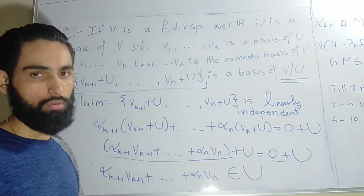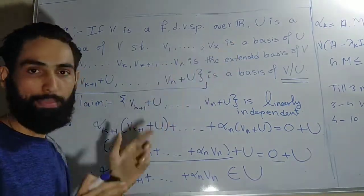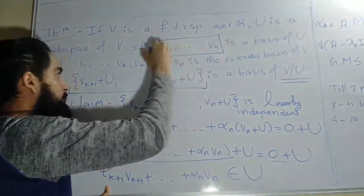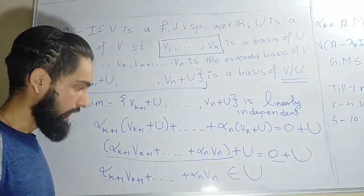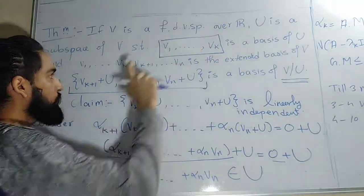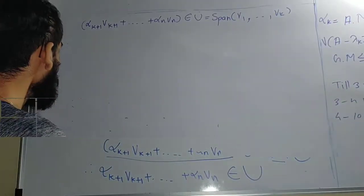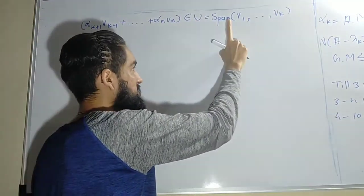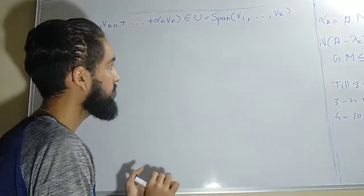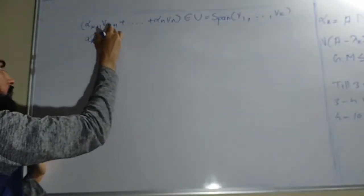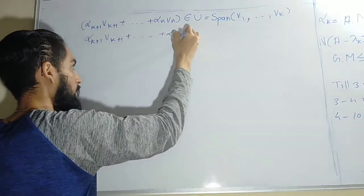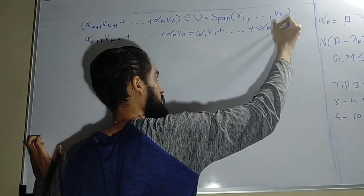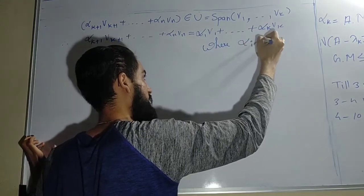What do we know about U? U is a subspace spanned by v1, ..., vk. Since that element belongs to U, it must be a linear combination of those basis elements. So we can write: αk+1·vk+1 + ... + αn·vn = α1·v1 + ... + αk·vk, where the scalars αi come from R.